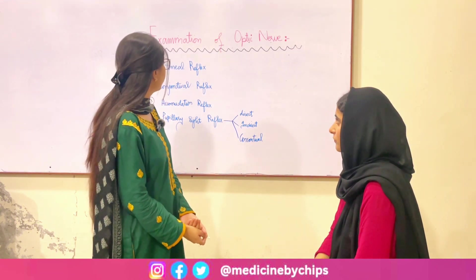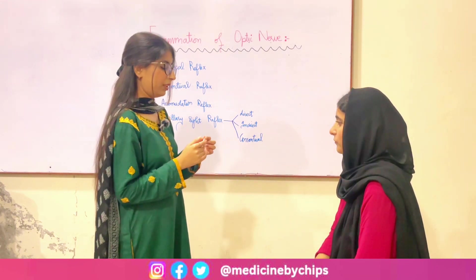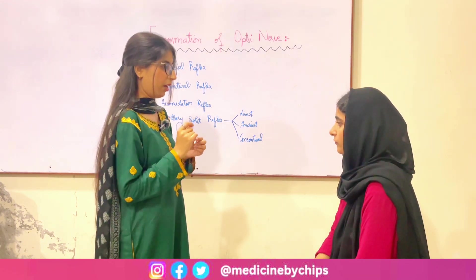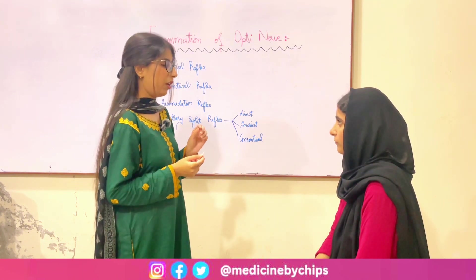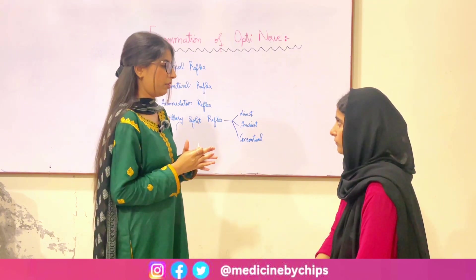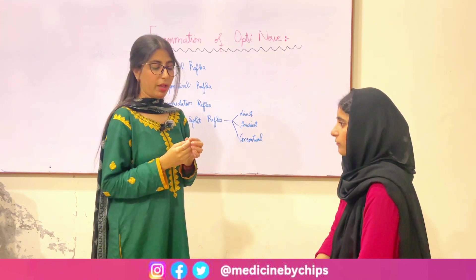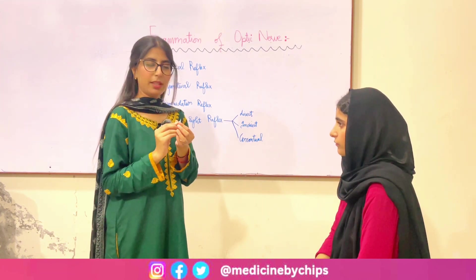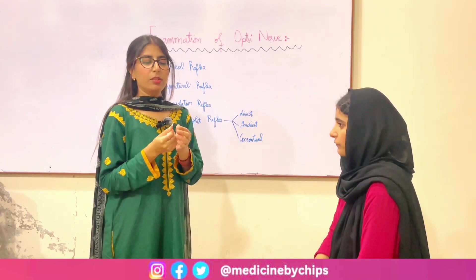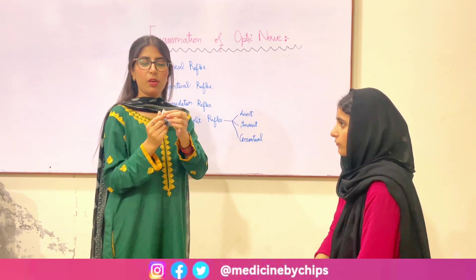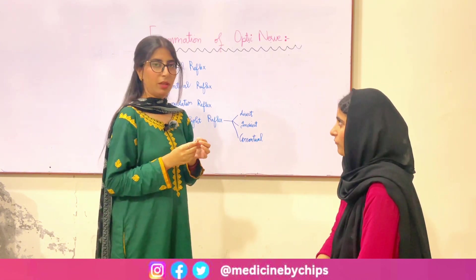Starting with the corneal reflex. I am going to place the tip of this cotton into your eye and check for your response. If you have any irritation or any problem during this you can tell me. For this we need either a cotton or a tissue paper and make one of its ends pointed, through which we are going to perform the experiment. Here is the cotton with its pointed end and I am going to start the experiment.